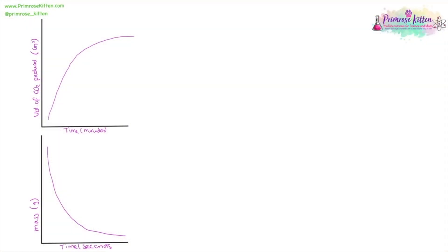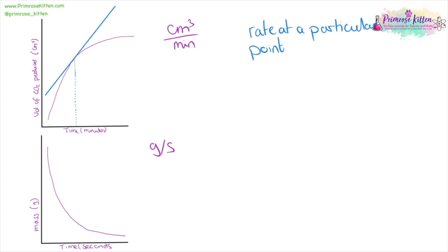During rate of reaction, we need to look carefully at the units used. For example, volume in cm³ over time in minutes gives units of cm³ per minute. Time in seconds and mass in grams gives grams per second. In the first graph, volume of carbon dioxide being produced goes up; in the second, mass being lost goes down. If you want to find the rate at a particular point — say two minutes or five minutes — you need to draw a tangent: a straight line that touches the curve just at that point.